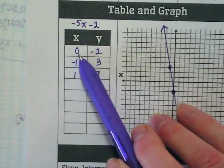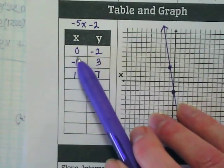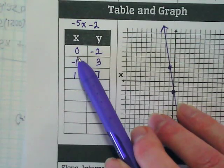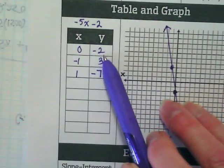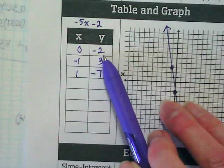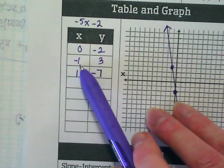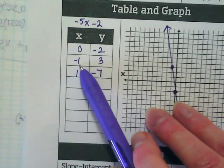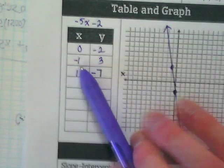Let's try it with the numbers that we have. Negative 5 times 0 minus 2. Does that work? Negative 5 times negative 1 is positive what? 5. Minus 2 is 3.